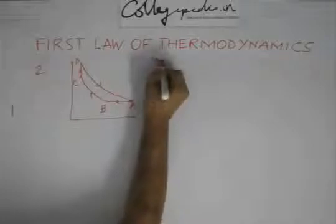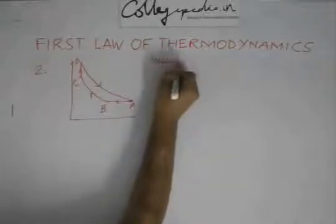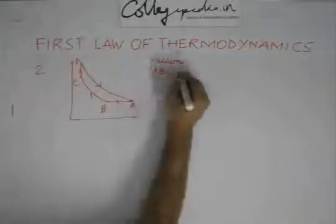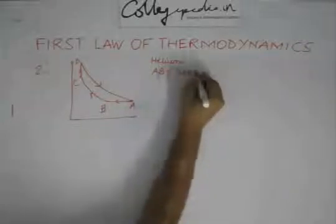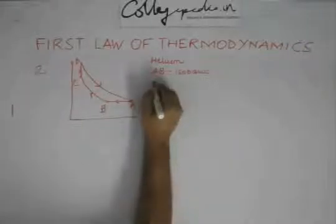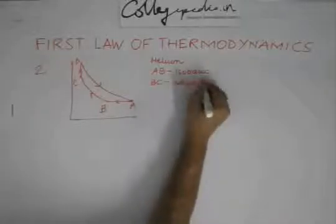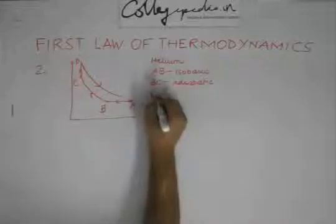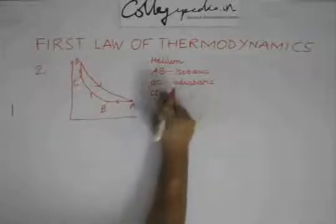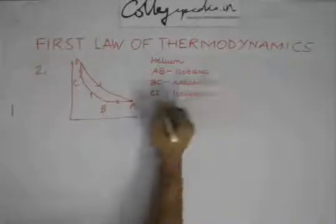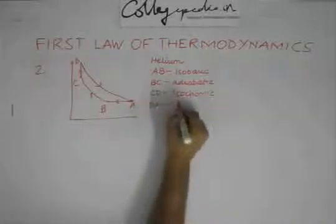It is said that we use helium. AB as you can see is an isobaric process. BC is an adiabatic process. CD is an isochoric process. And DA is an isochoric process.